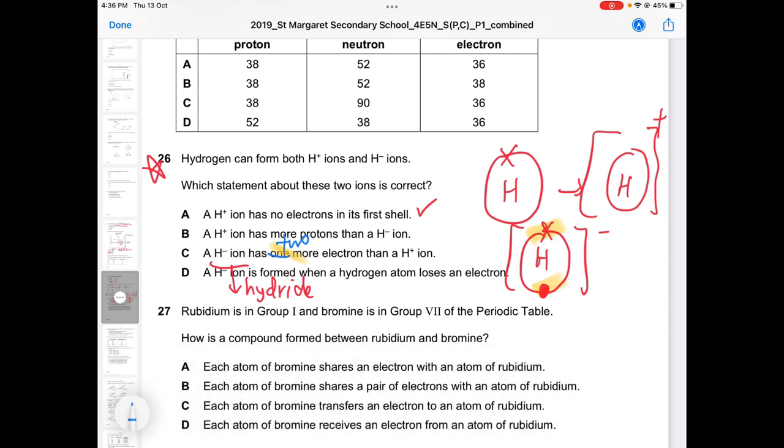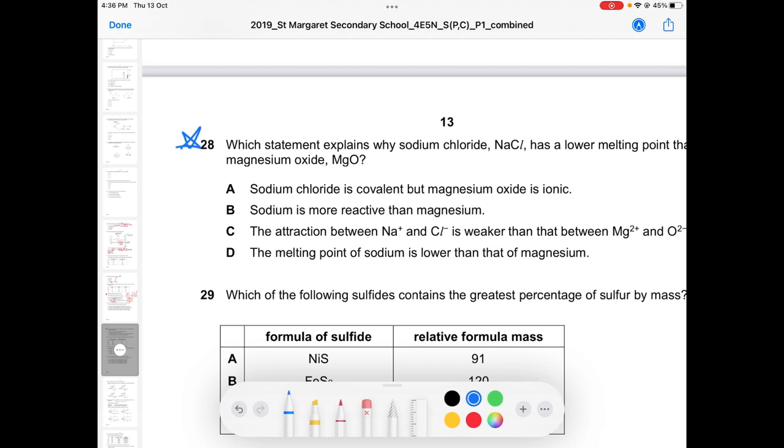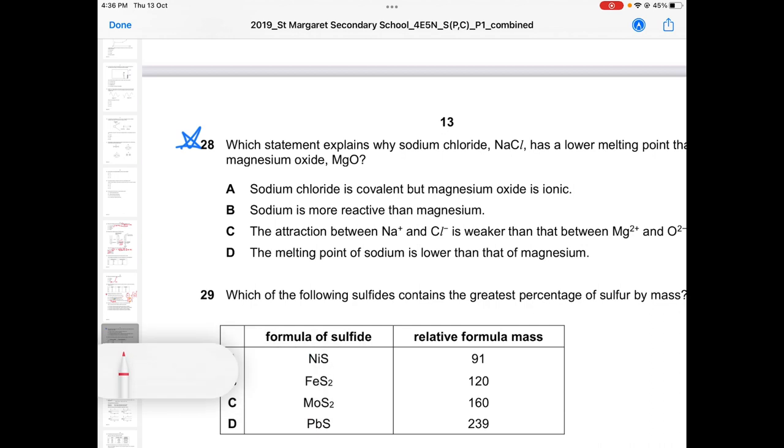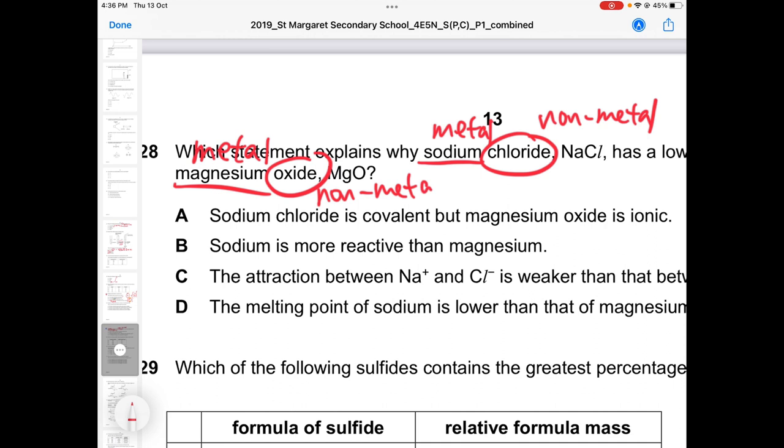Let's take a look at question 8. Question 28, put a star. This question can come out as a structured question. Both of them are ionic compound because you have metal, and your oxide is non-metal, chloride is also non-metal. So both are ionic compound. Option A is definitely wrong because sodium chloride is definitely not covalent.